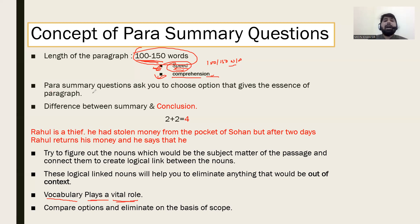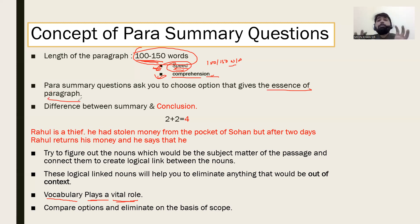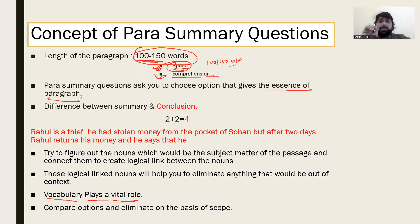A sentence is a group of words. When you understand the words, you understand the sentence; when you understand the sentence, you understand the whole paragraph. So speed and vocabulary are both important. Para Summary questions ask you to choose the essence of the paragraph. Now let's talk about the difference between summary and conclusion.